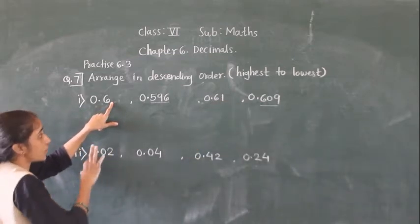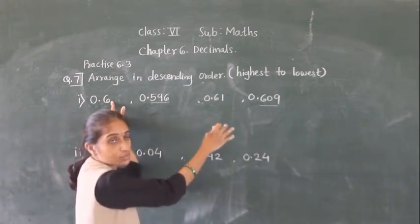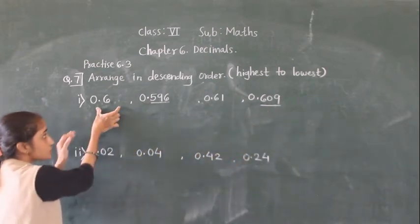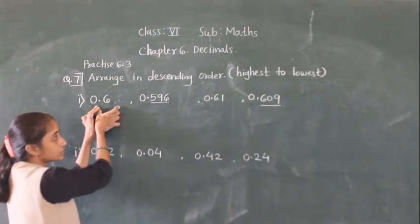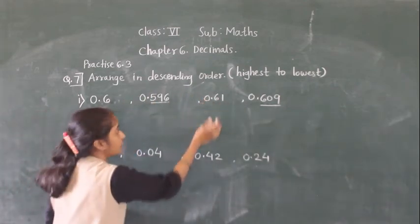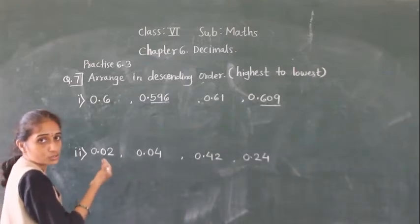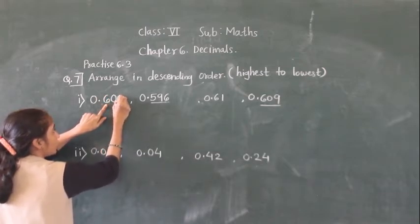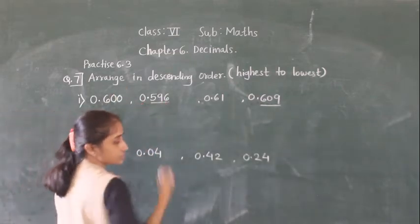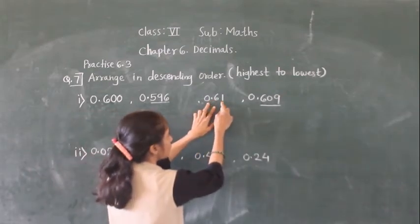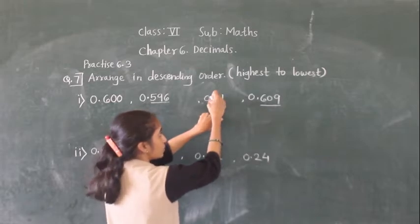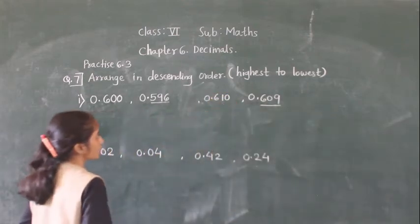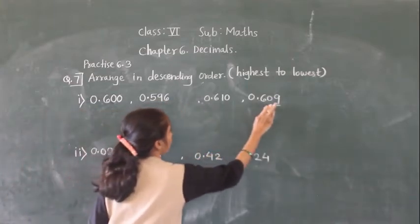We need to make 3 digits after the decimal point everywhere. So for 0.6 add two zeros to get 0.600, and for 0.61 add one zero to get 0.610. Now all numbers have 3 digits after the decimal point.